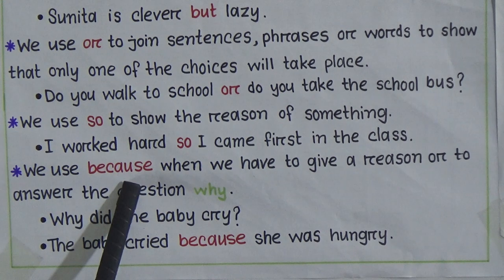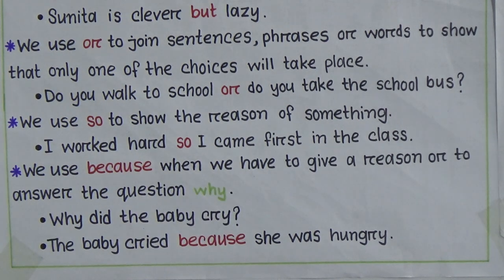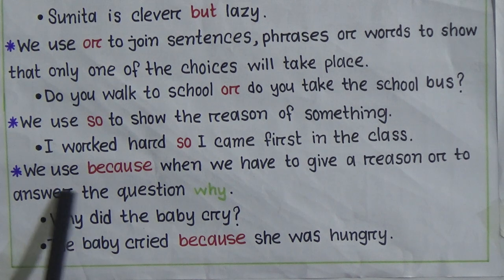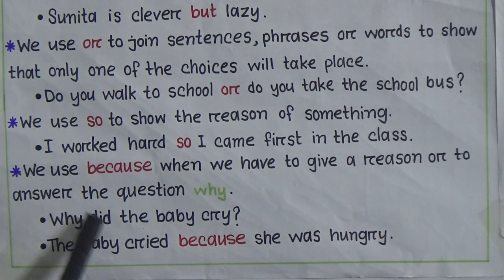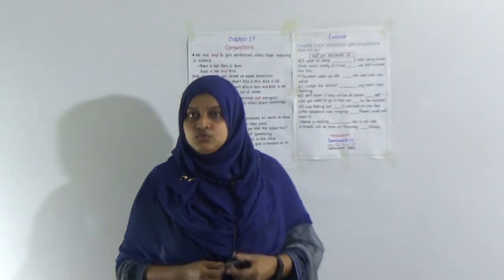Next: we use 'because' when we have to give a reason or to answer the question 'why'. For example: 'Why did the baby cry?' - if someone asks you the reason using 'why', you have to use 'because' when answering. So you answer: 'The baby cried because she was hungry.' You use 'because' to explain the reason.